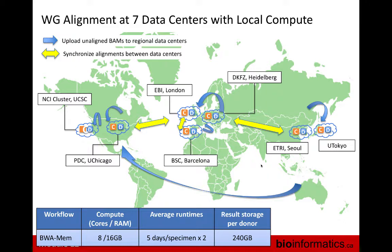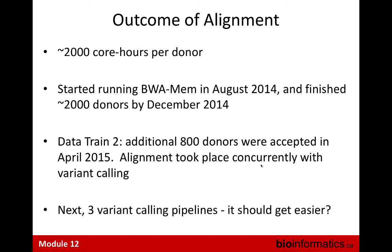We also had the NCI cluster at UCSC, a specialized center to deal with TCGA data. Australia at the time had very slow bandwidth, so Australia shipped us 40 pounds of hard drives to Chicago so Chicago could do the upload for them. That has since changed because AWS has set up a center in Australia. We found that alignment took about 2,000 core hours per donor, done over a couple of months. When we went to variant calling, we thought it would require roughly the same resources — but we were very wrong.